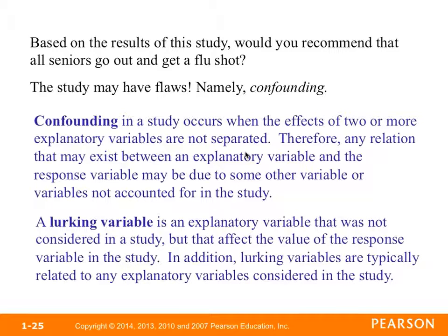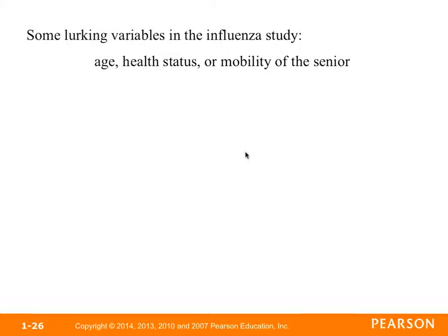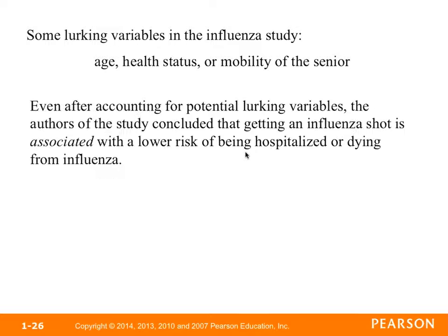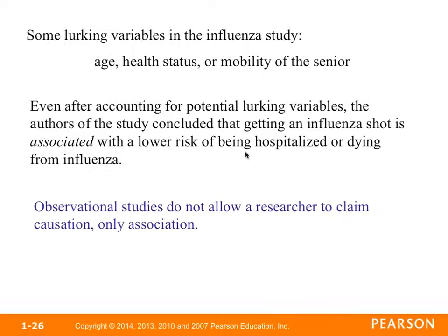A lurking variable is an explanatory variable not considered in the study that affects the value of the response variable and is typically related to the explanatory variables considered. Some lurking variables for the flu study would be age, health status, and mobility. Even after accounting for potential lurking variables, the authors concluded that getting a flu shot is associated with lower risk of hospitalization or death from the flu. It's important to note the word 'associated' — observational studies do not allow a researcher to claim causation; we can only say the variables are associated.